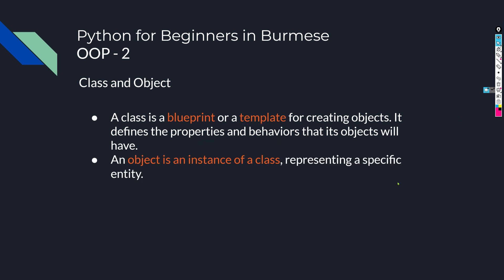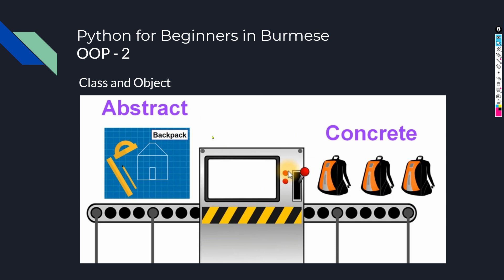An object is an instance of a class representing a specific entity. Think about a blueprint — it represents a particular domain based on the position of an asset.